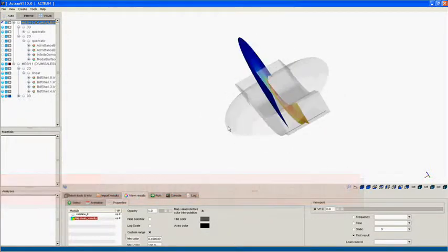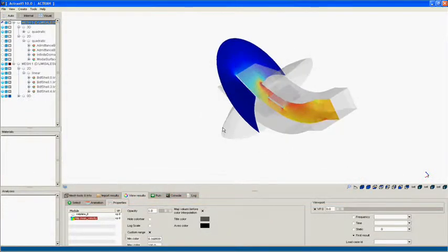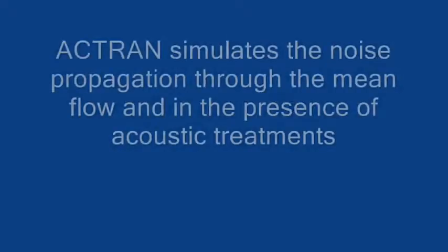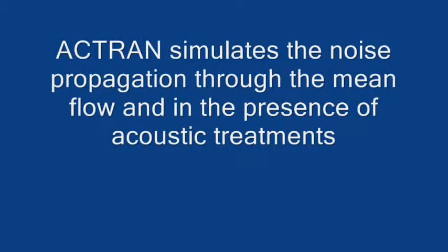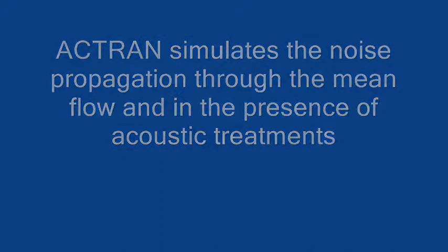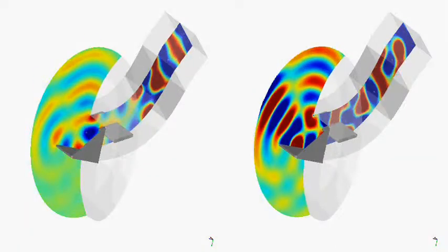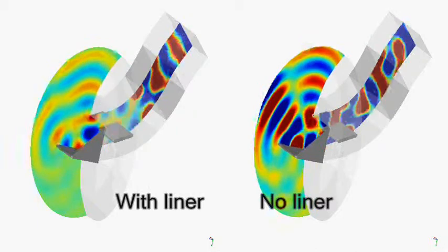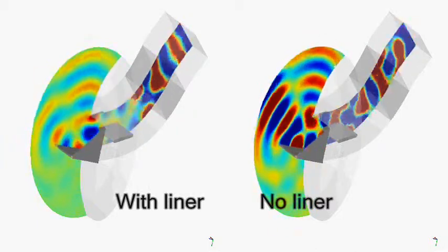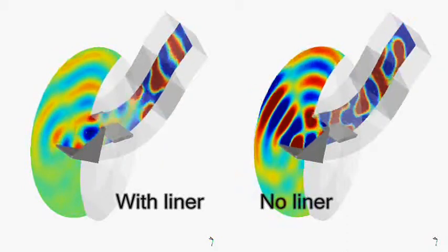ACTRAN calculated the noise propagation through the duct, taking into account the effect of the mean flow and the attenuation provided by the sound treatments. This animation shows the ACTRAN results with acoustic treatments on the left and without acoustic treatments on the right.